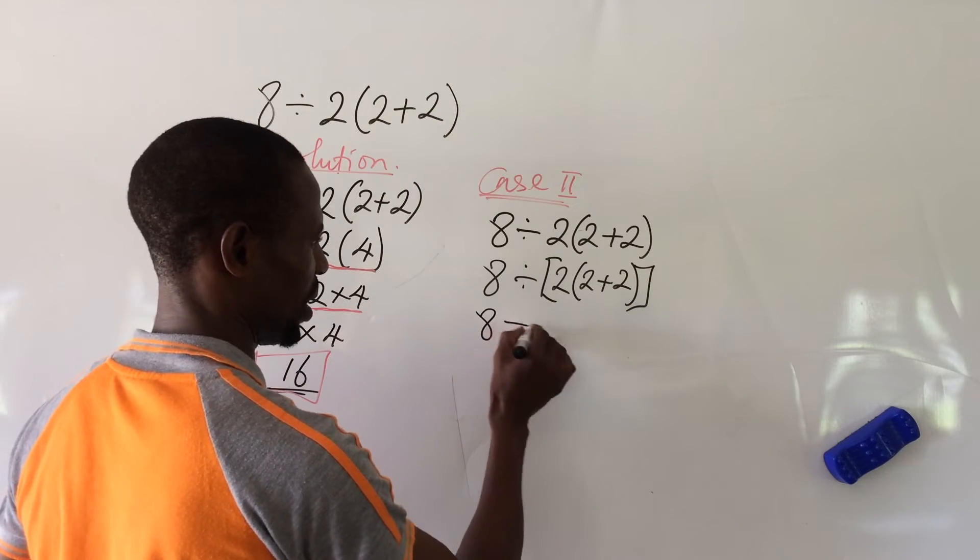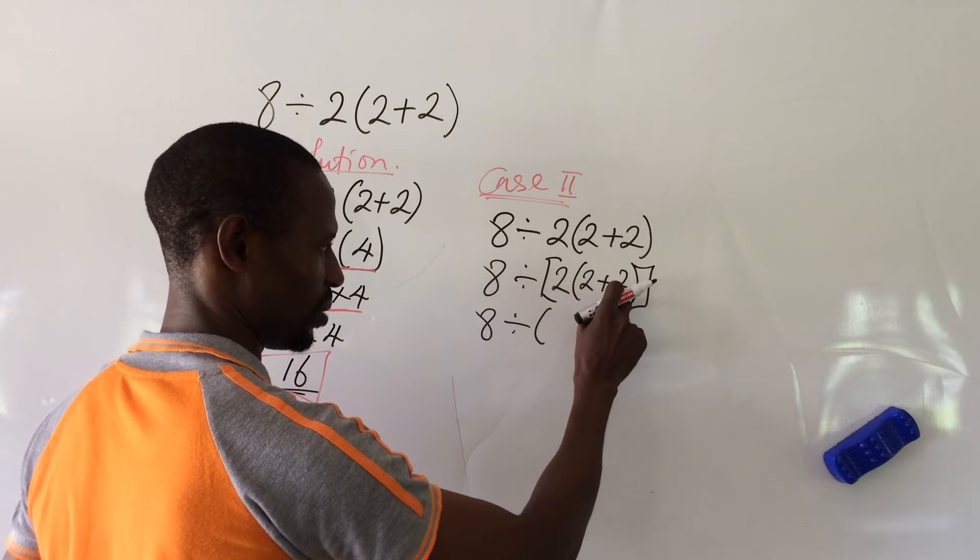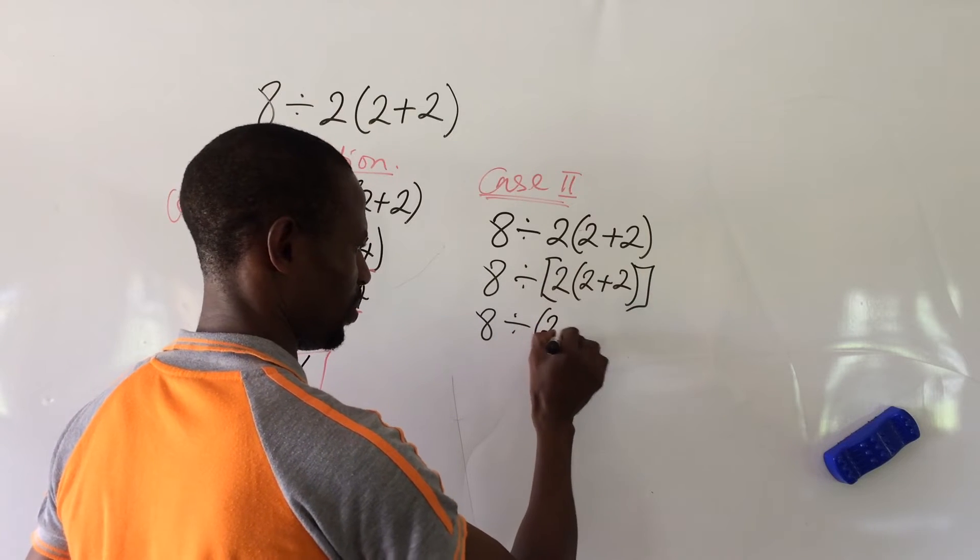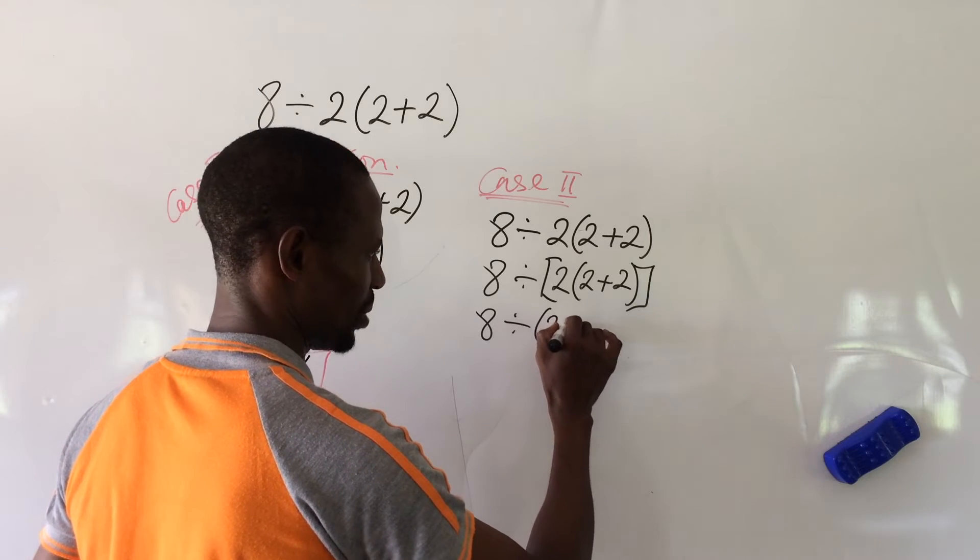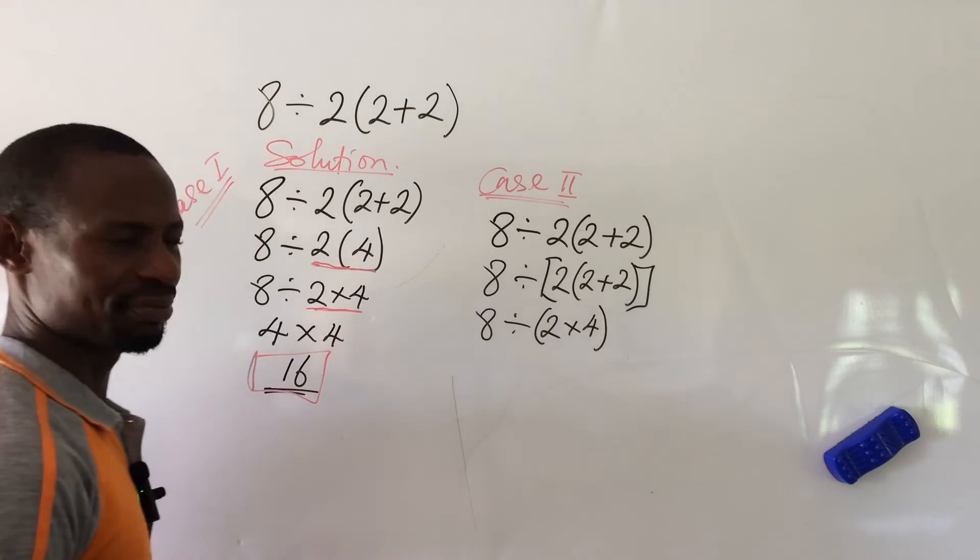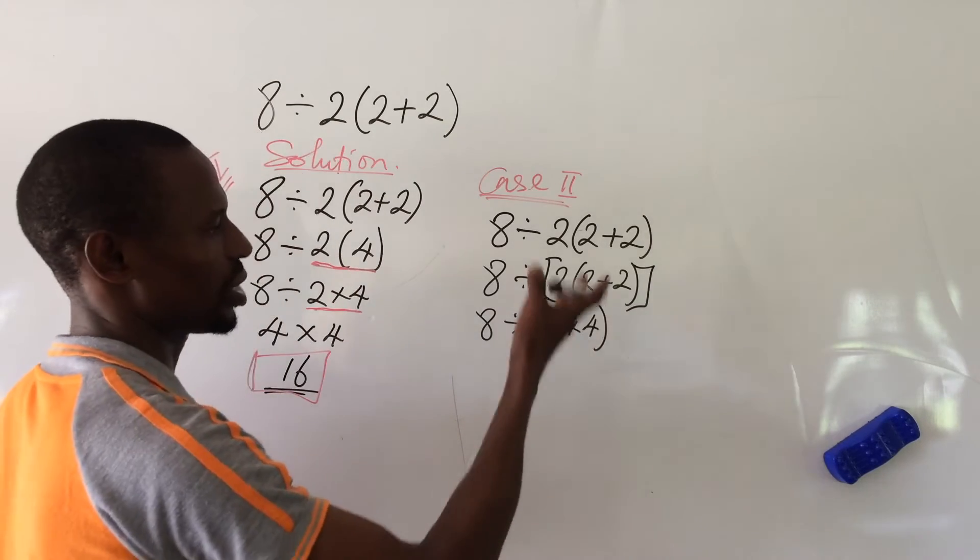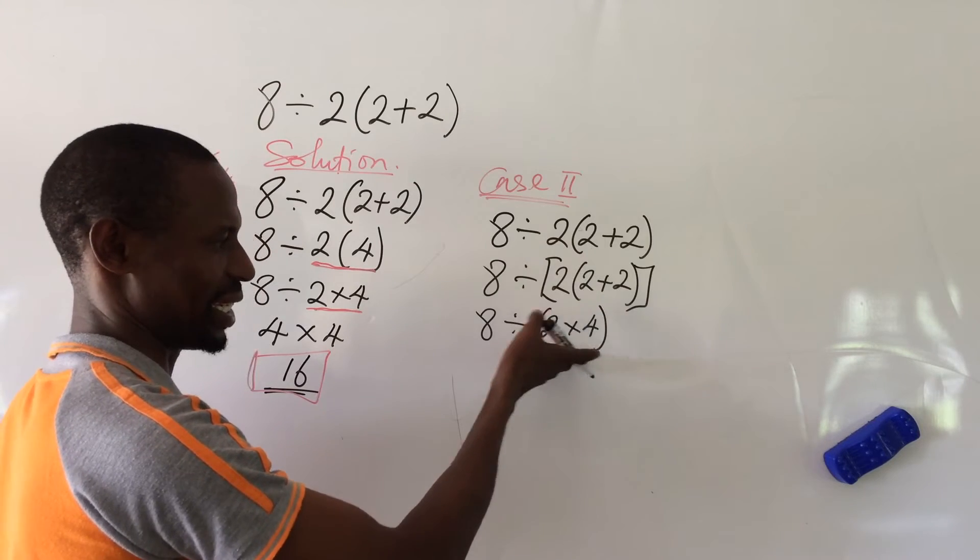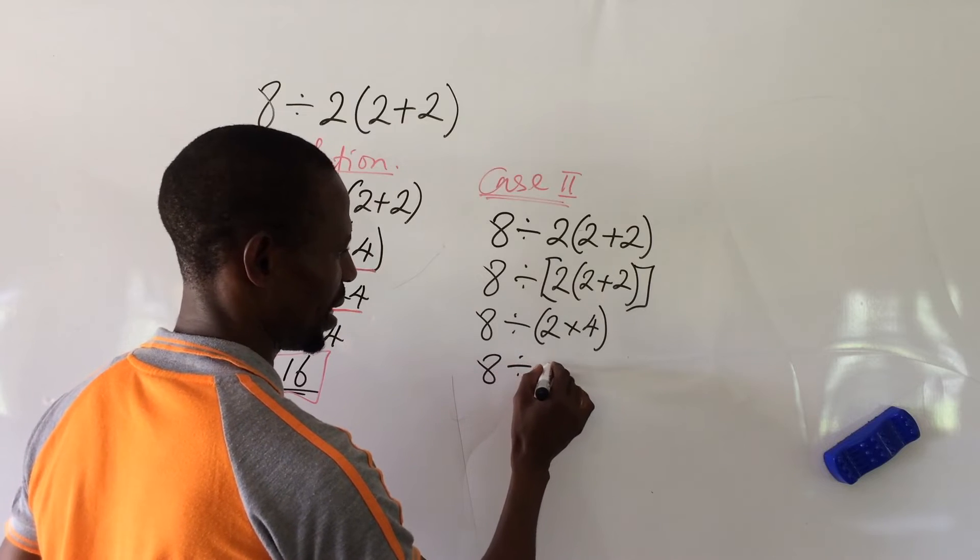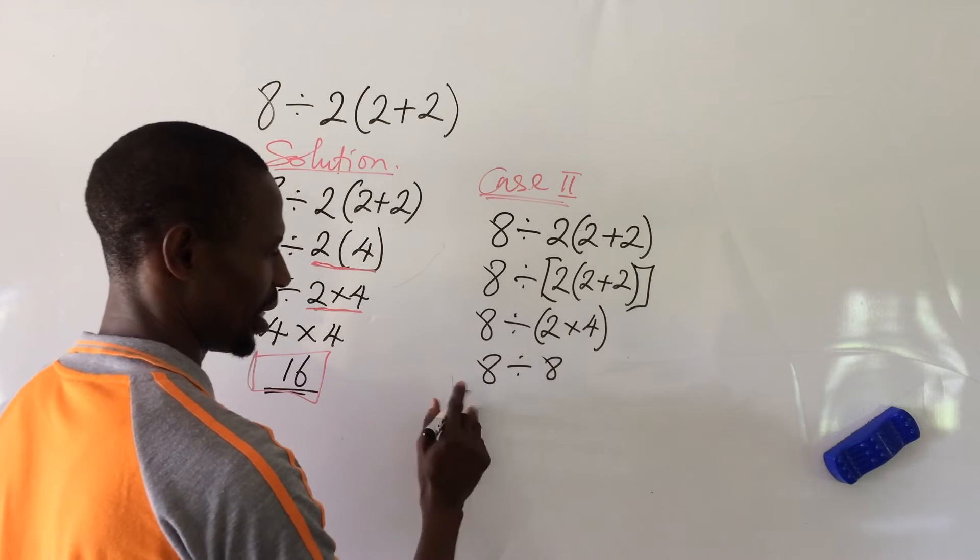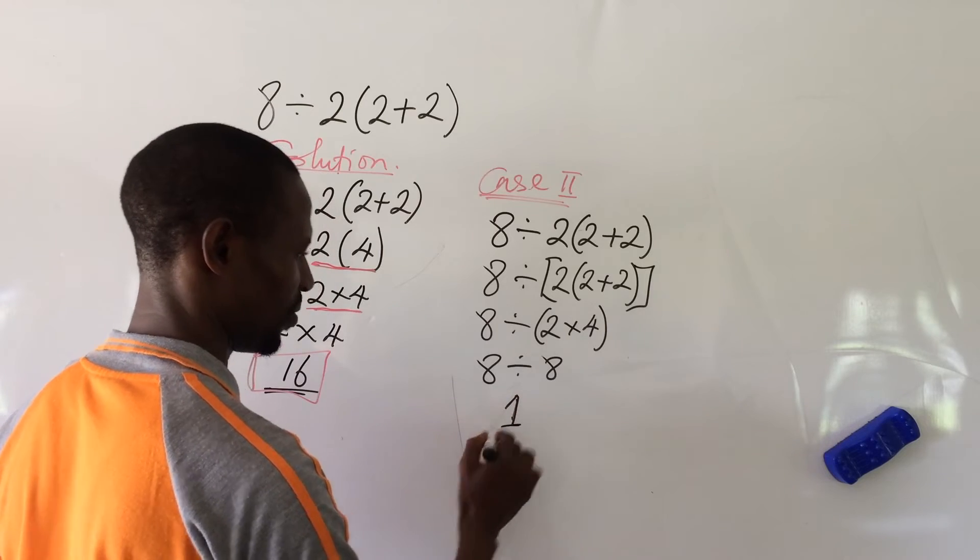And so we have this to be 8 divided by, we add up these 2 in the bracket. So we go to the left with bracket, open 2, then times 4. So if we work with this bracket again because we have to deal with whatever that is in the bracket before coming out. So we're going to have this to be 8 divided by 8. And 8 divided by 8 will give us 1.